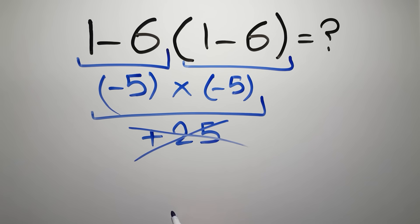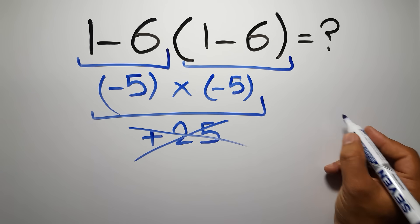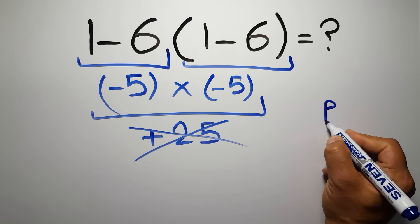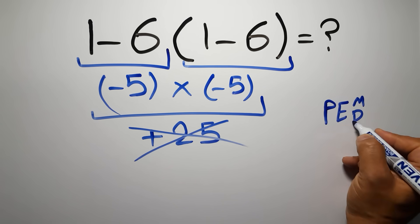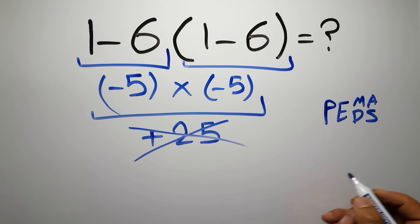But this answer is not correct, because according to the order of operations, first we have to do parentheses, then exponents, then multiplication or division, and finally addition or subtraction.